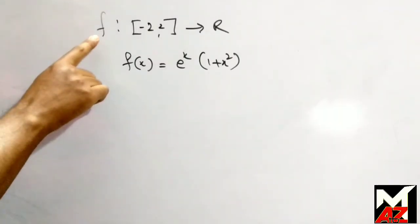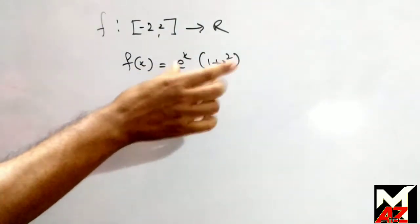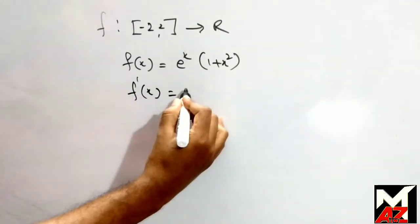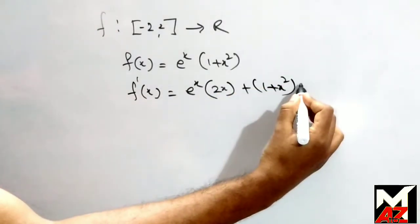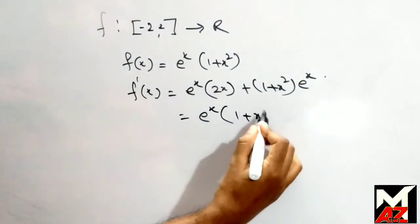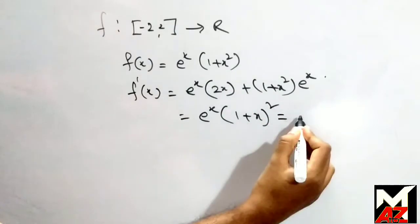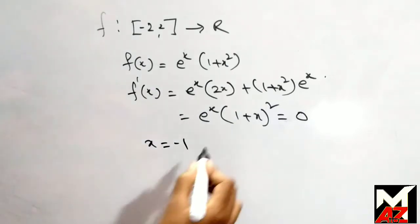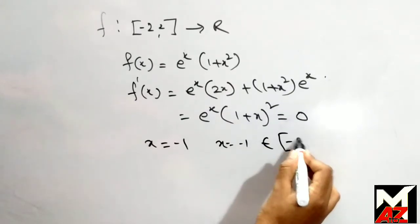Here the function is f: (−2, 2) → ℝ and f(x) = e^x(1 + x²). We first find the derivative: f'(x) = e^x · 2x + (1 + x²) · e^x = e^x · (1 + x)². If we equate f'(x) = 0, we get x = −1. Also, x = −1 belongs to (−2, 2).